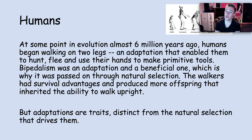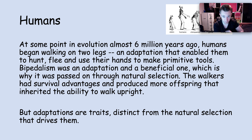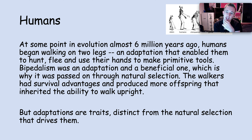Now we look at humans. At some point in evolution, roughly six million years ago, humans began walking on two legs. Before that, we didn't. It enabled us to hunt for food, to run away, and to use our hands to make tools. But in the start, only some of them could do it — but those were the ones that survived, and eventually we can all do it. It's called bipedalism. It was an adaptation and it was a great one, which is why it was passed on.